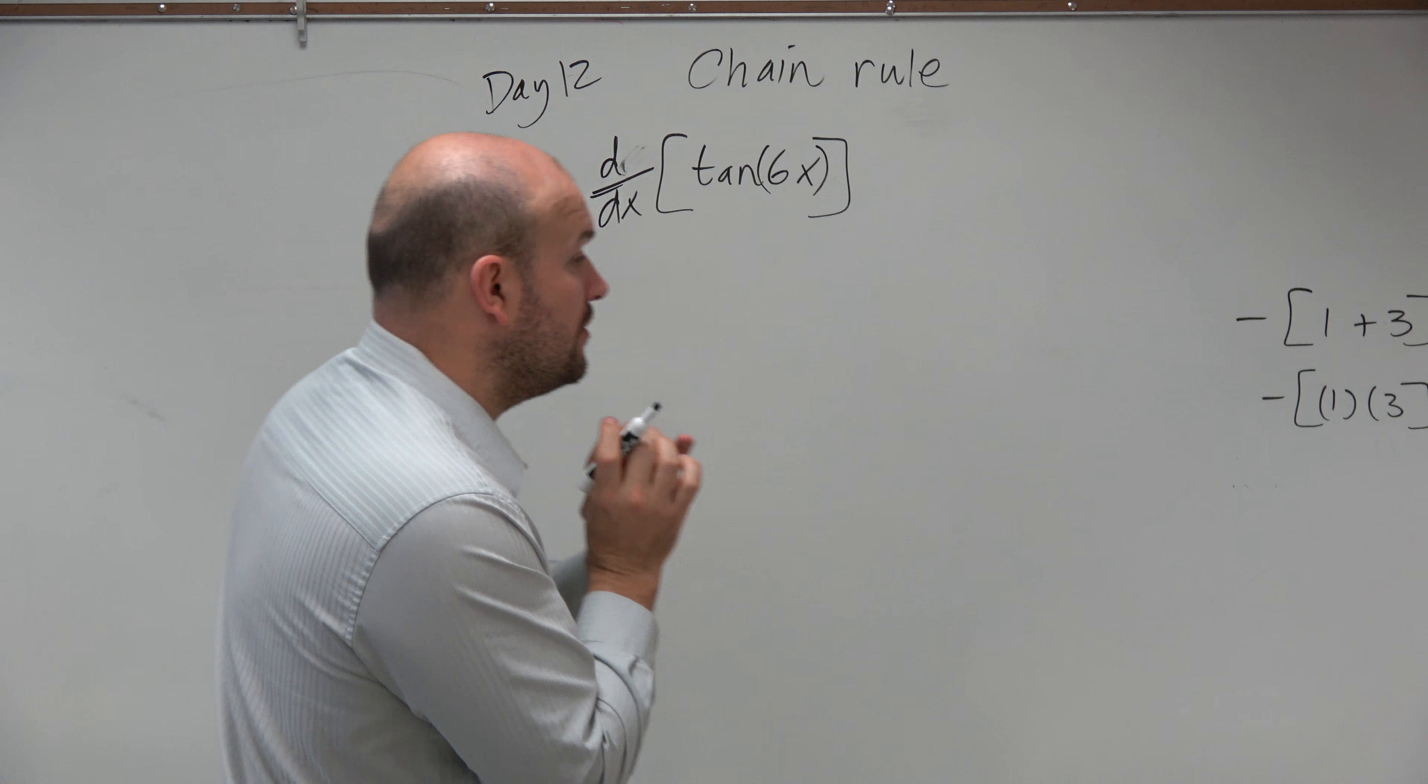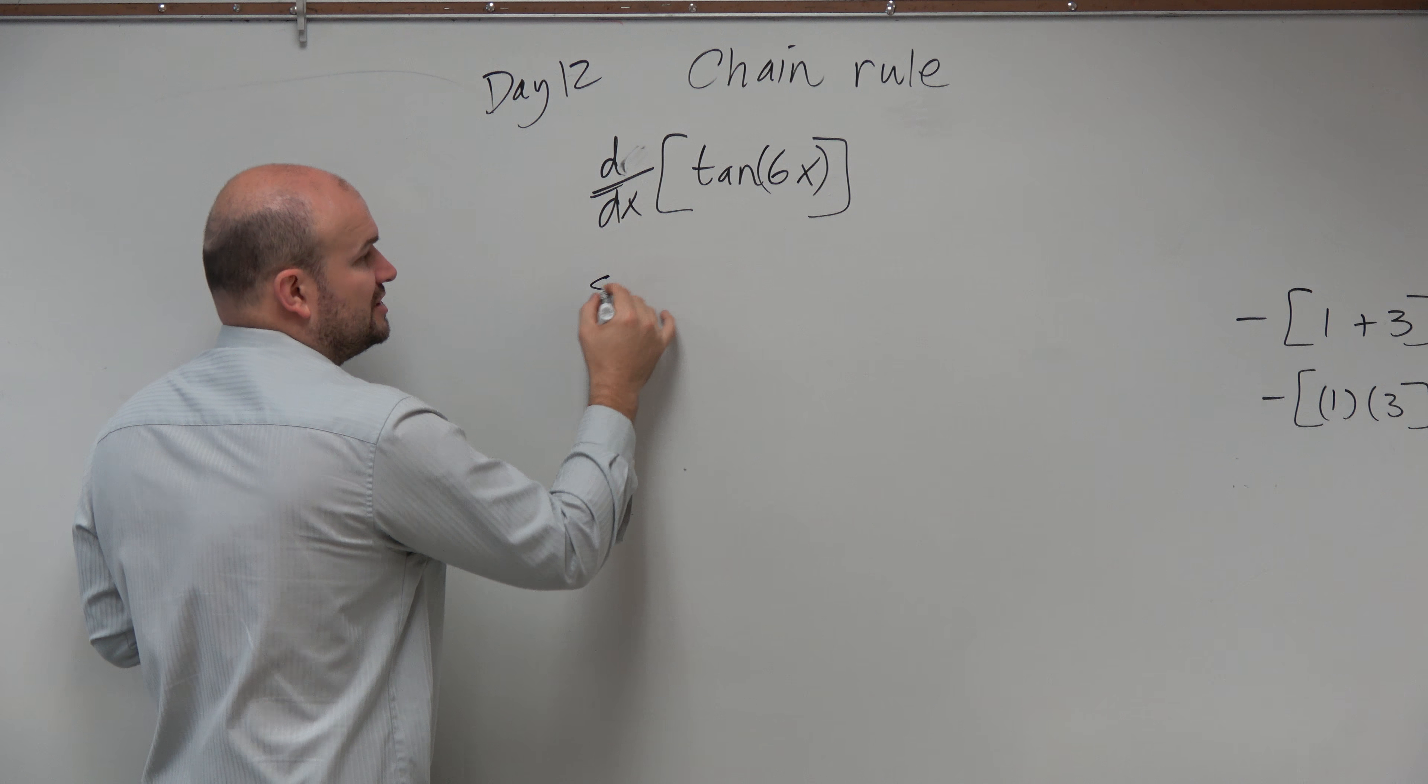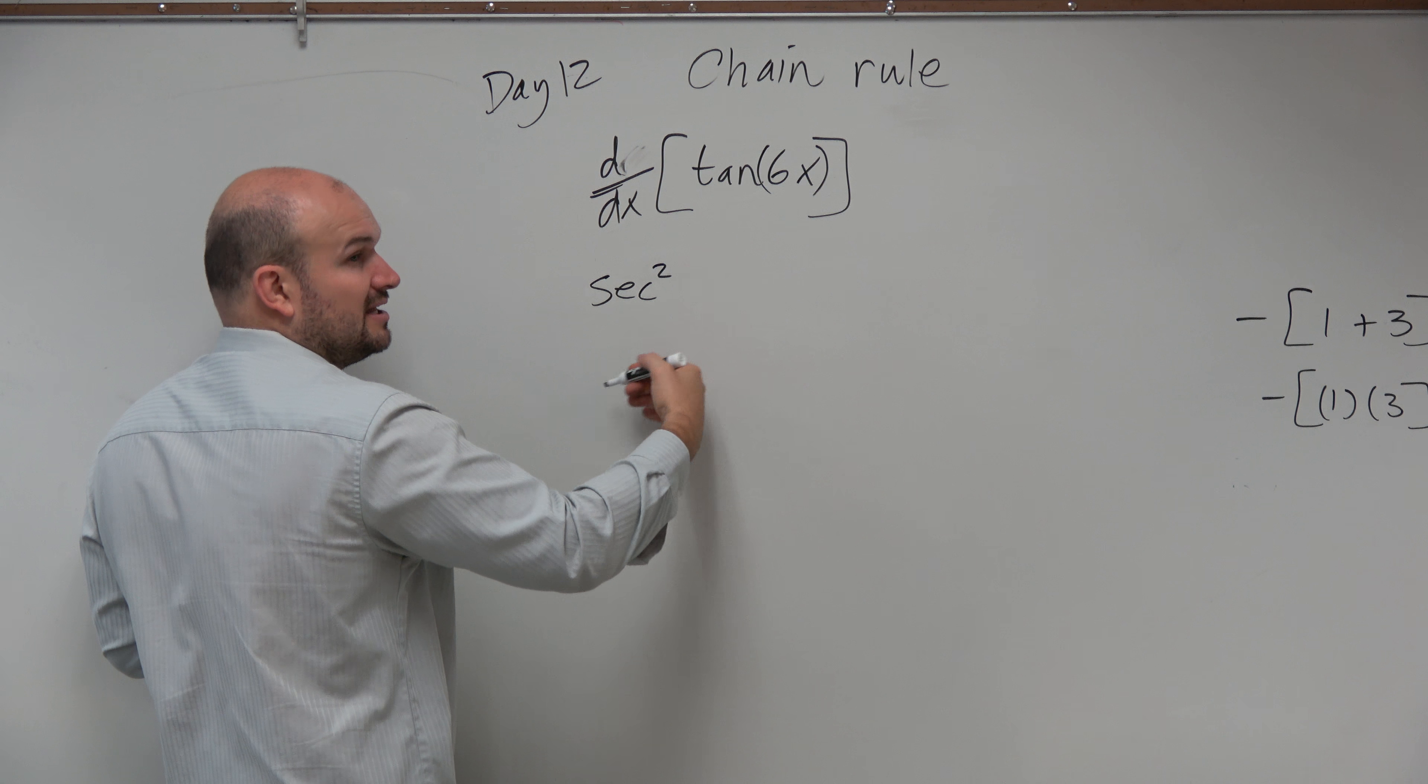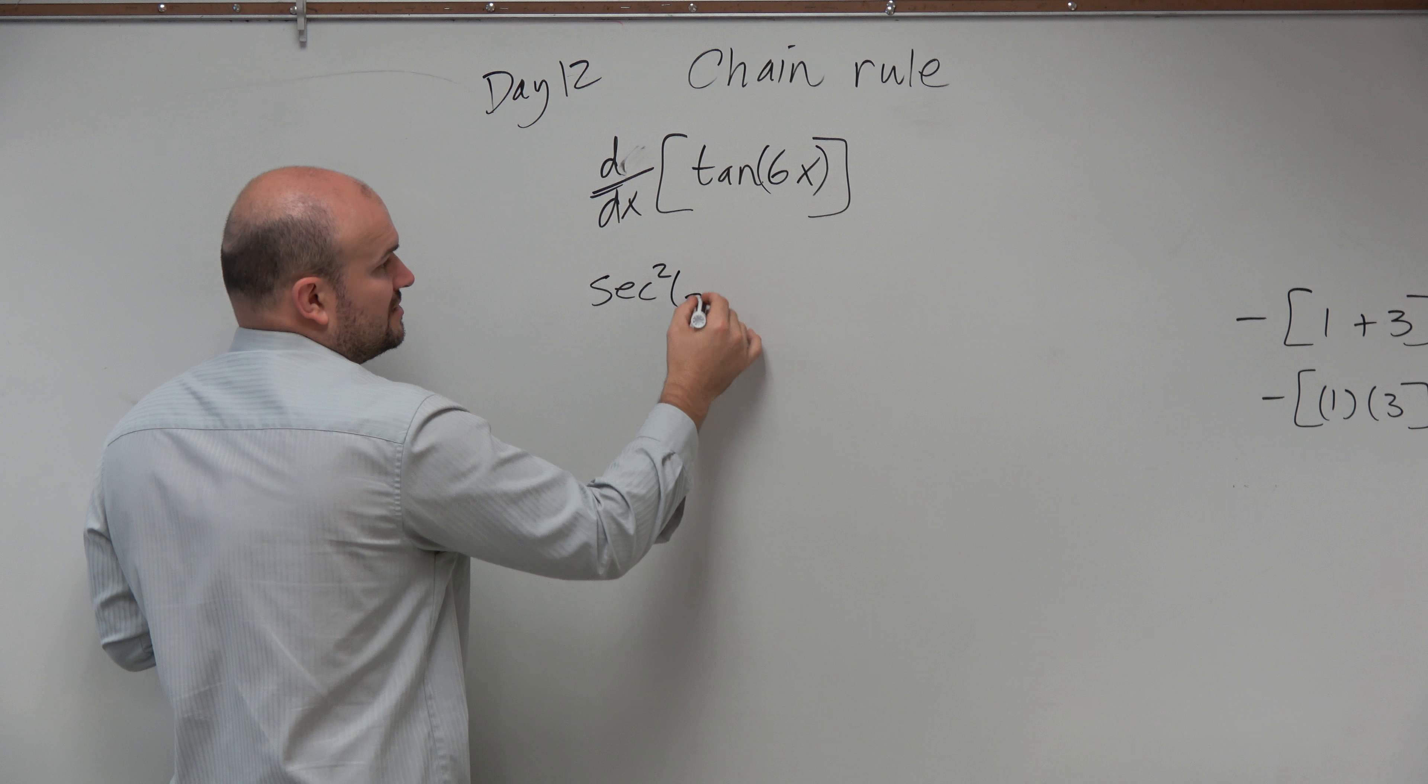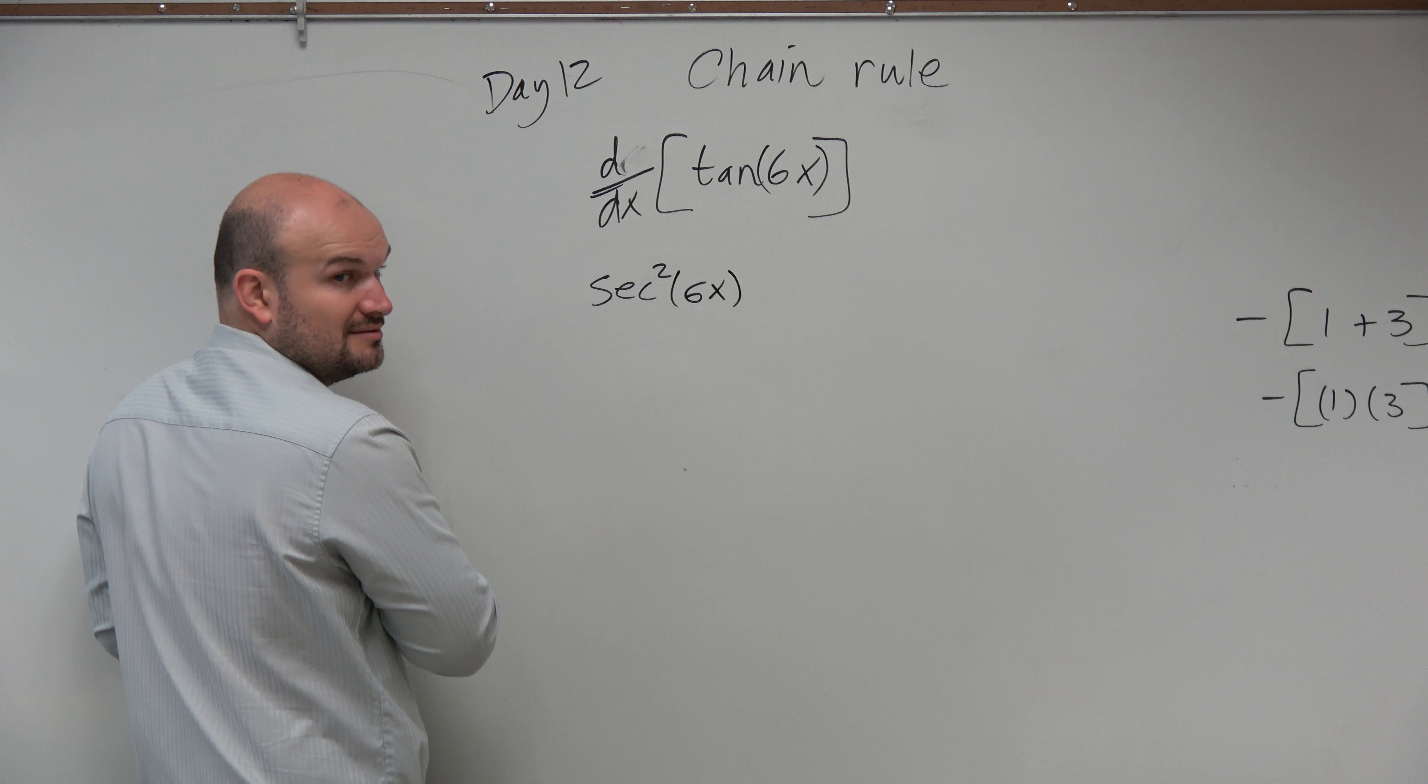Yes? OK. So now I know that I have to take the derivative of the outside function, which is secant squared. But I'm not going to take it of x. I'm going to plug in my g of x function, which is 6x, right? Yes?